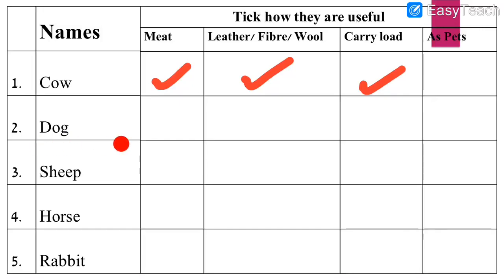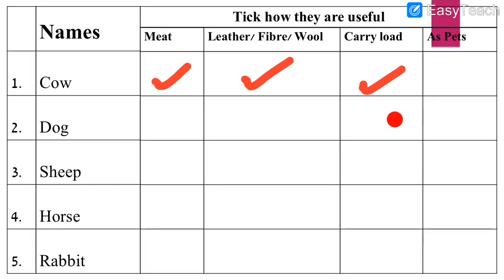Number 2: Dog. Can we get meat from dog? No, we cannot. Can we get leather, fiber, or wool from dog? No, we cannot. Can dog help us carry load from one place to another? No, dogs will not carry load. Can we keep the dog as a pet animal in the house? Yes, we can keep dogs as pet animals. Dogs are our best friends and we can keep them in homes as pet animals.